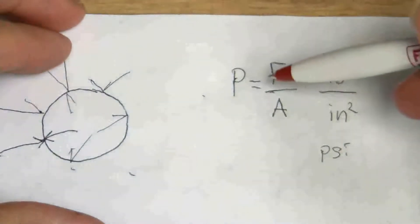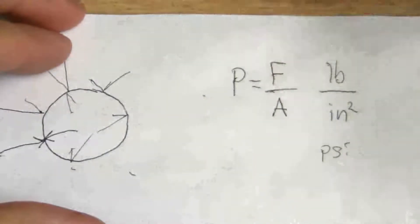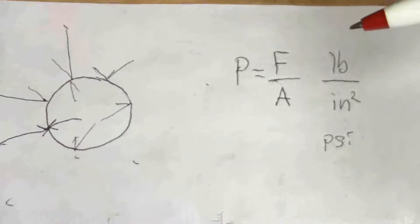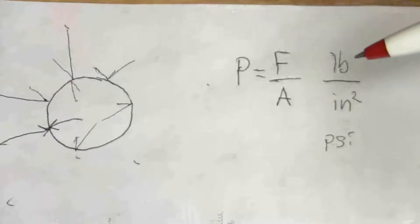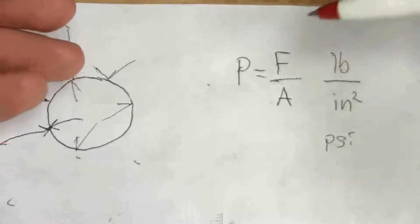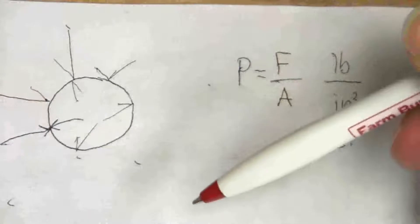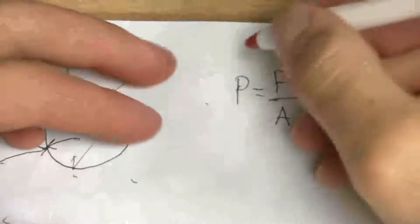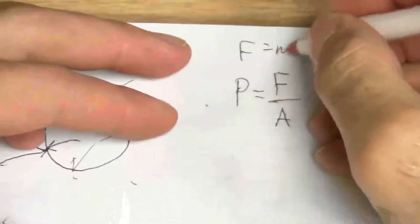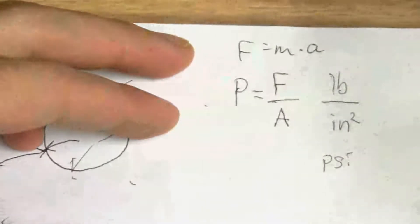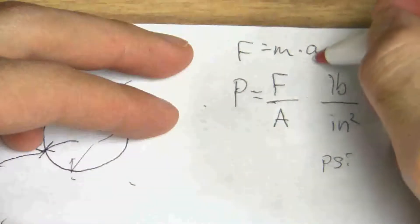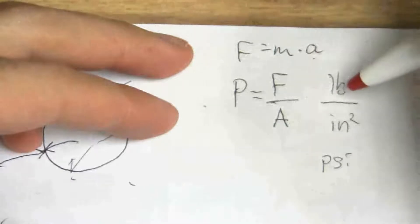Pounds is our force. And when you get on the bathroom scale, we're used to thinking of pounds as a weight or mass, but it's actually mass times the acceleration of gravity. Force is mass times acceleration, the acceleration of gravity in this case.